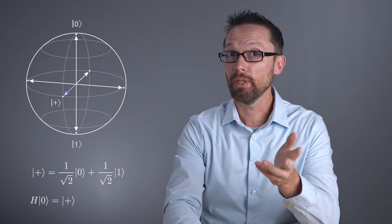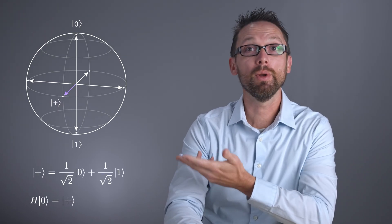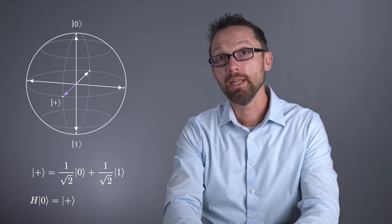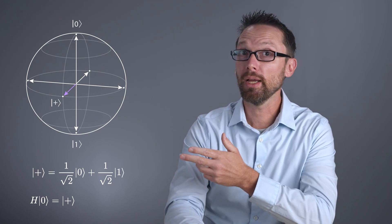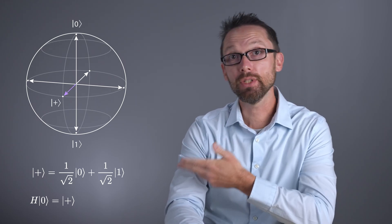For example, a qubit can be in this state, which is a superposition of zero and one commonly called a plus state. This state is made on a quantum computer by applying a so-called Hadamard gate shown here to the state zero.